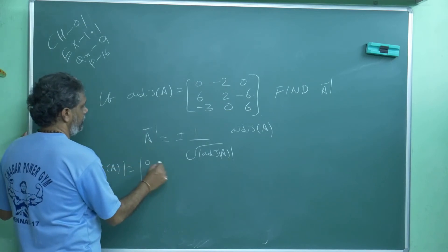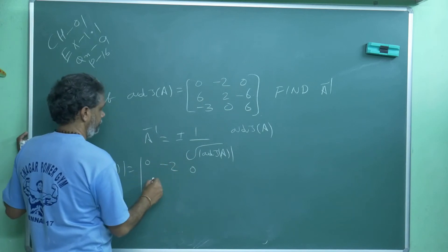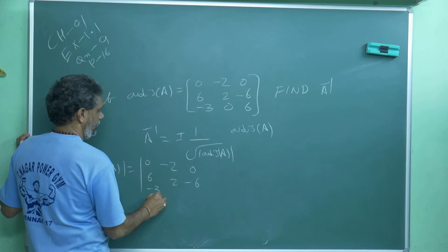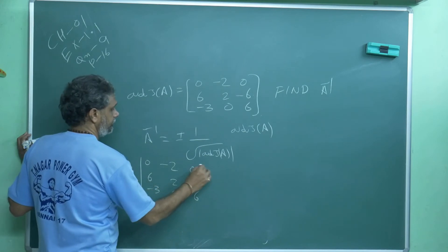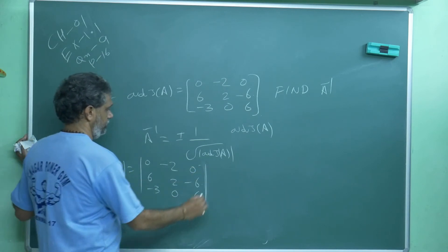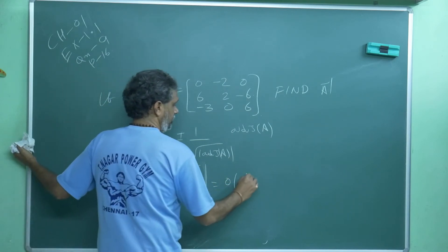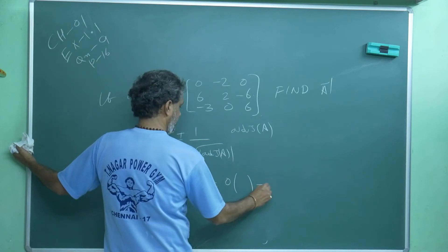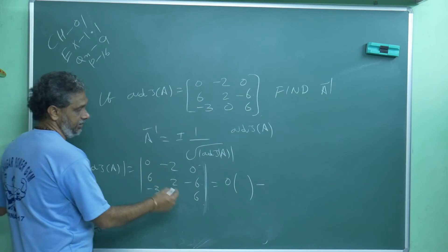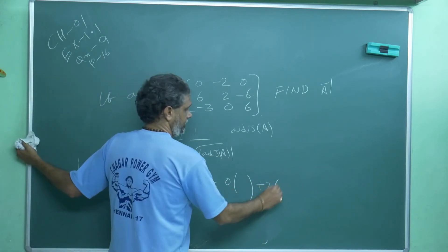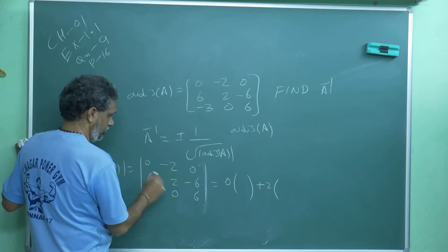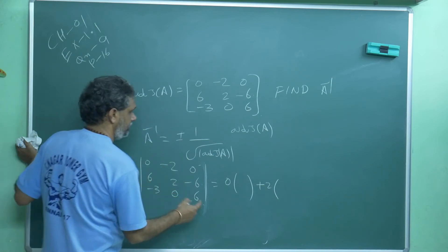Determinant of adjoint of A: write like this 0, 6, 2, minus 6, minus 3, 0, 6. 0 into anything is equal to 0, then the second element is minus. So minus minus becomes plus. Plus 2 into, leave this fellow, leave this column, this row. So 6 into 6 is 36.